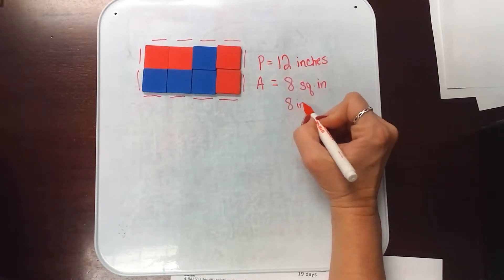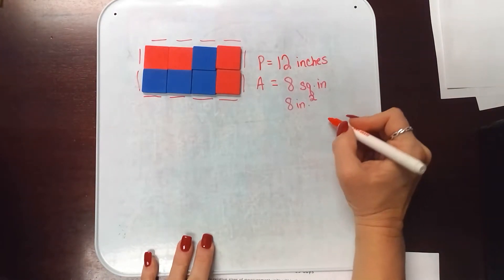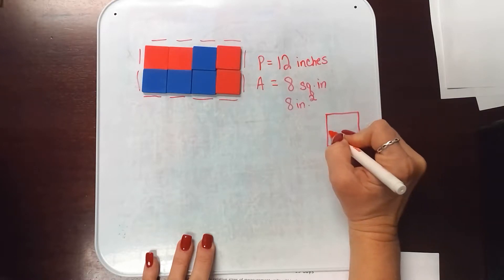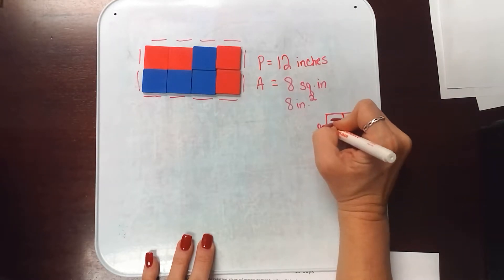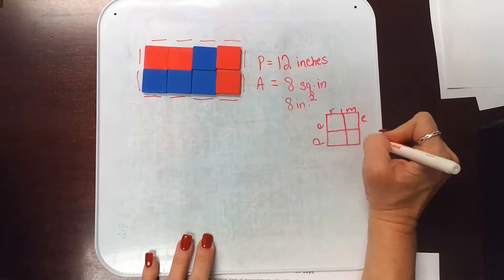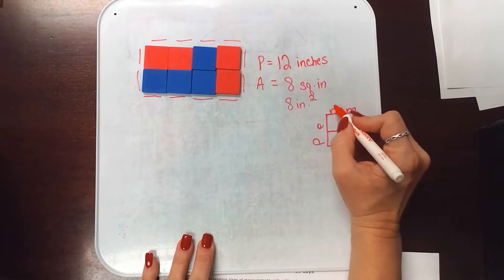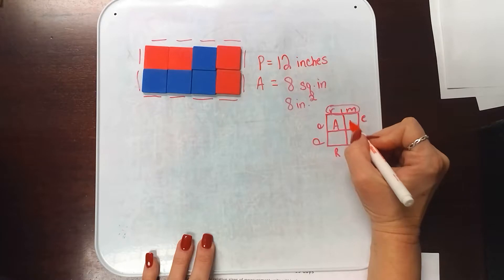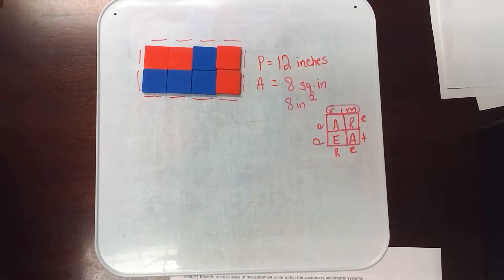One thing I do to help students remember area and perimeter is a window pane. We write 'perimeter' on the outside of the pane, which reminds them we're looking for the outside or the rim. On the inside we write 'area,' which helps students remember that to find the area we're looking for the space inside the shape.